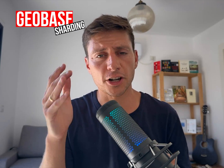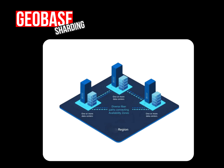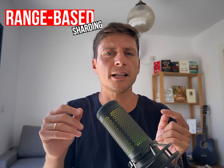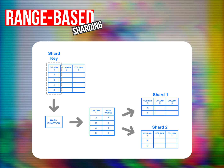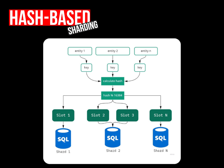There are different sharding techniques depending on the data structure. The first technique is GeoBase sharding, where data is partitioned based on user locations, usually continents or regions. The second option is Range-Based sharding, where we divide the database on a range of key values — for example, using alphabet letters, we'd have 26 different shards, one per letter. Another technique is HashBase sharding, which uses a hashing algorithm to generate a hash based on the key value to compute the partition.